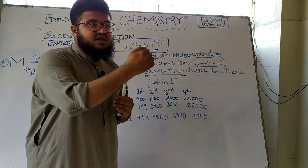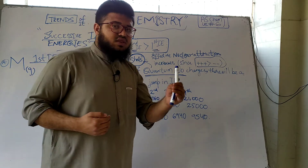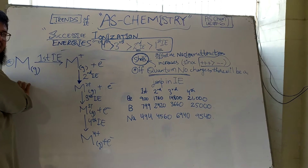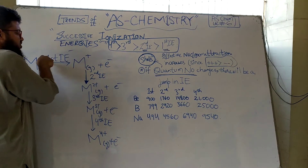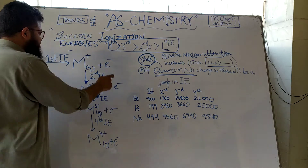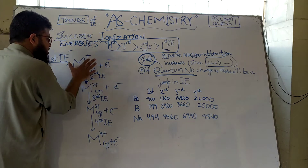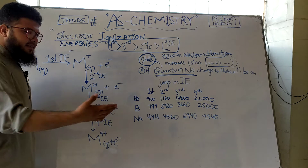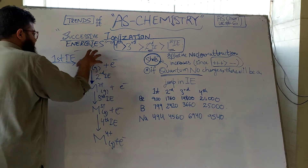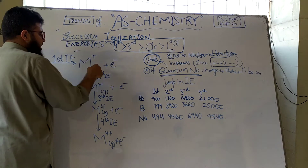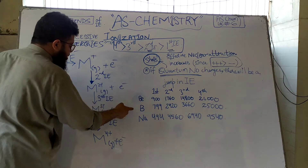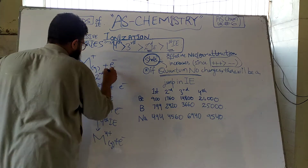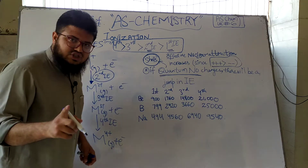For example, this M(g) is the gaseous atom. If you provide the first ionization energy to it, you remove one mole of electrons and get a univalent positively charged ion. That energy is the first ionization energy. Then if I provide more energy to that positively charged ion and remove one more mole of electrons, I get a divalent positively charged ion, and that energy is the second ionization energy.